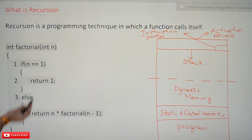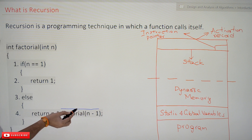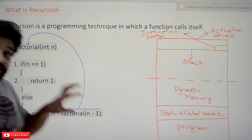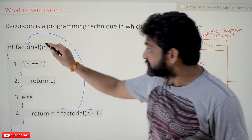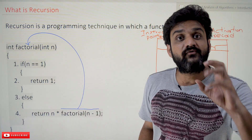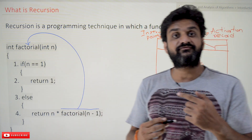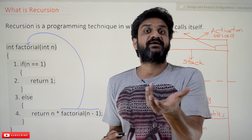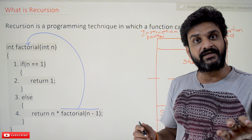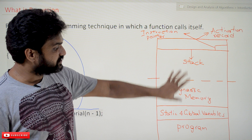In this example, there is a function that is calling itself — that is what we call recursion. This program is for finding the factorial of a given number. How we are going to find the factorial without any iterations, without any for loop — that we will try to understand clearly. But before understanding how recursion works, we should know about the concept of a process.